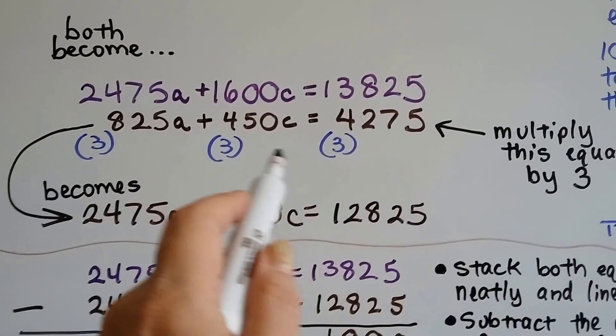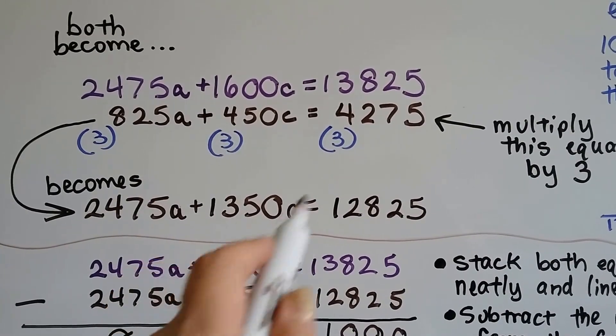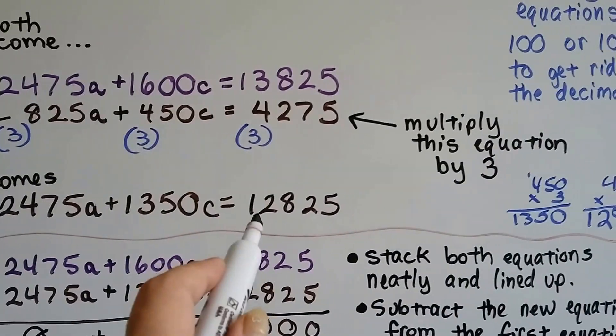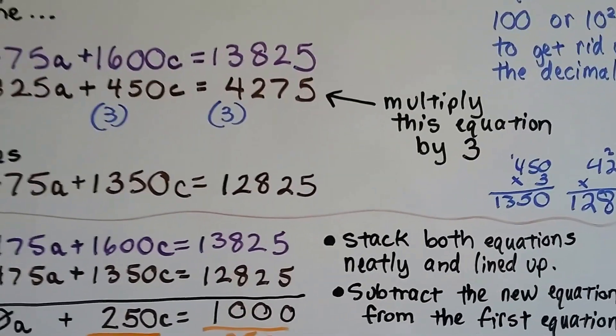And all the other ones have to come along. 450 times 3 is 1350C, and 4,275 times 3 is 12,825. I did a little multiplication on the side to make sure.